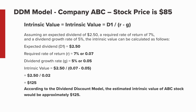If we adjust the required rate of return to 7%, given an expected dividend of $2.50, a required rate of return of 7%, and a dividend growth rate of 5%, the intrinsic value using the dividend discount model is calculated to be $125. Please note that these examples are for illustrative purposes only, and actual intrinsic value calculations require careful analysis, accurate projections, and consideration of other factors specific to the company and industry.